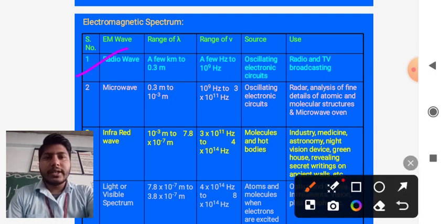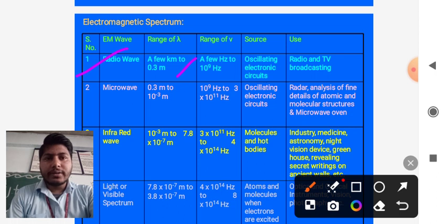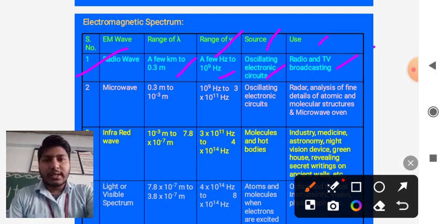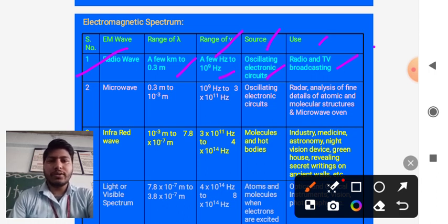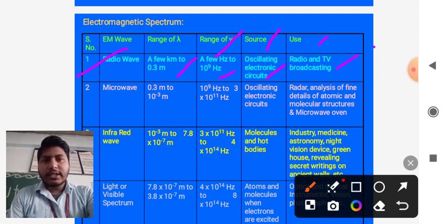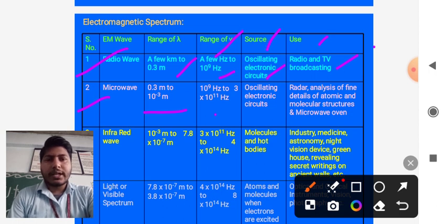Let us discuss the first ray, that is radio waves. The range of wavelength of radio waves is a few kilometers to 0.3 meter. Now let us go to the range of frequency which is a few hertz to 10 to the power 9 hertz. The oscillating electronic circuits produce radio waves for radio and TV broadcasting.